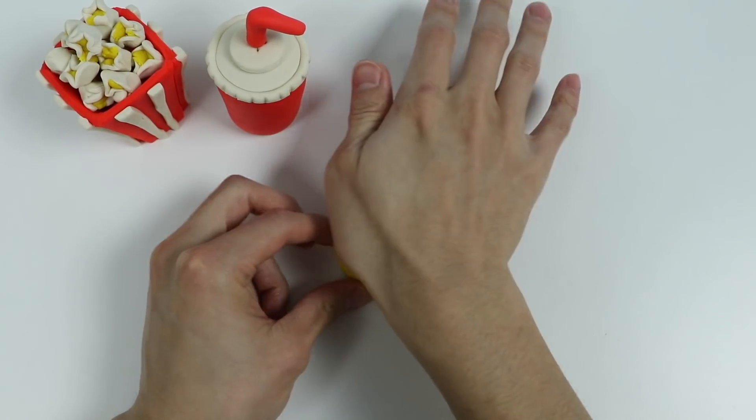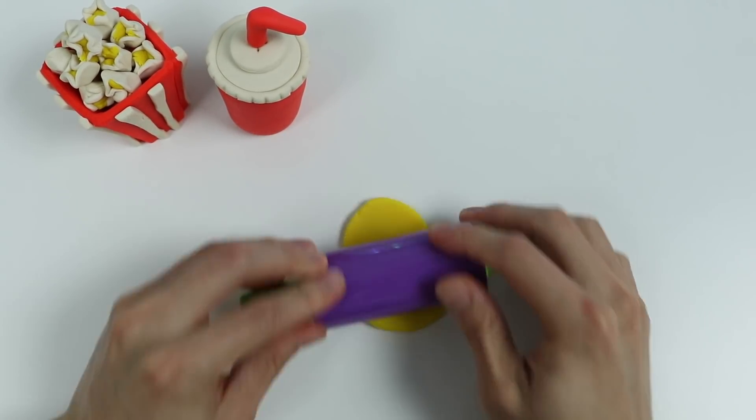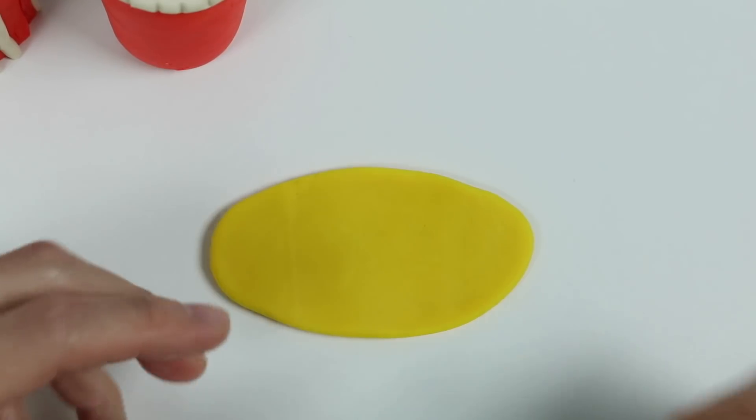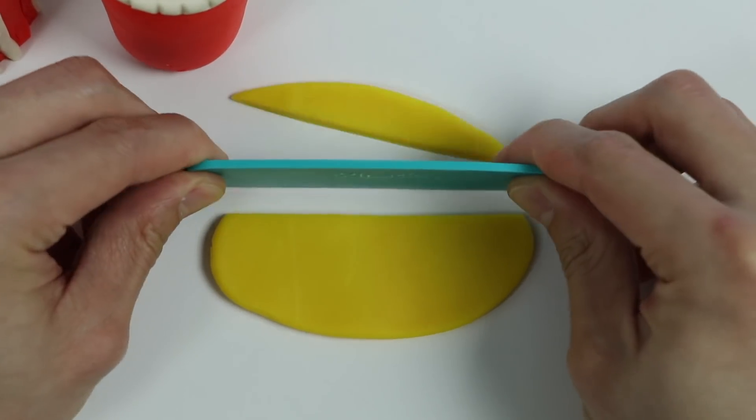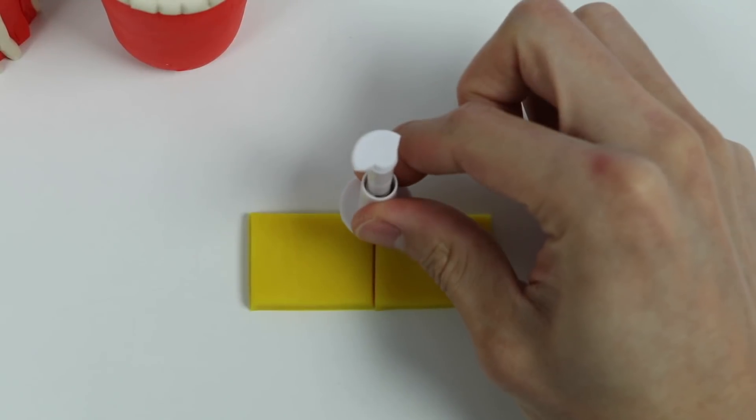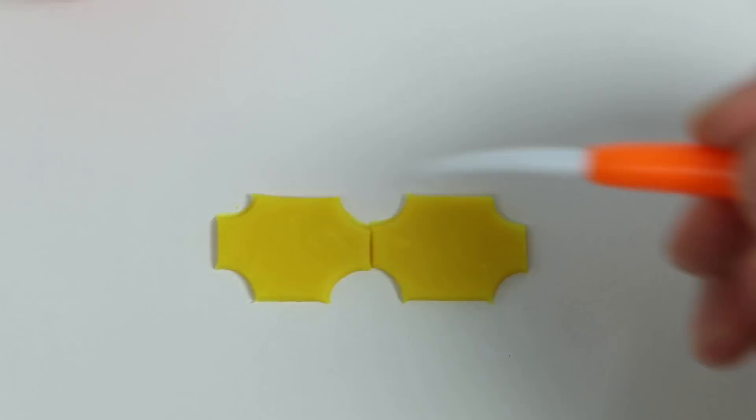Now you can't get into the movies without tickets. So let's make some. Roll out some yellow Play-Doh. Now let's use this cutter to make a rectangle shape. Cut this in half. Make the ticket shape. Add some final details.